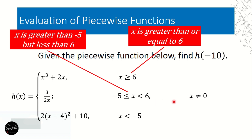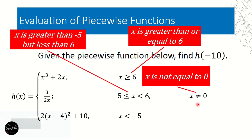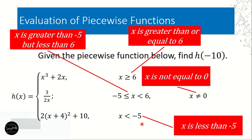There is also another condition: x should not be equal to 0, because if x equals 0, the function 3 over 2x becomes undefined — we cannot have 3 divided by 0. Now, is negative 10 between negative 5 and 6? No. So we cannot use the second function either. We move to the third condition: x is less than negative 5.